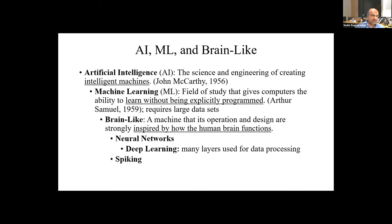Within the category of brain-like, we have neural networks, which is the focus of what I'm going to talk about today. And within that is the concept of deep learning, where many layers are used for data processing. There's also another notion called spiking, which Intel has been working on. I have a couple of slides from what they have announced recently. But the focus would be basically on deep learning models.